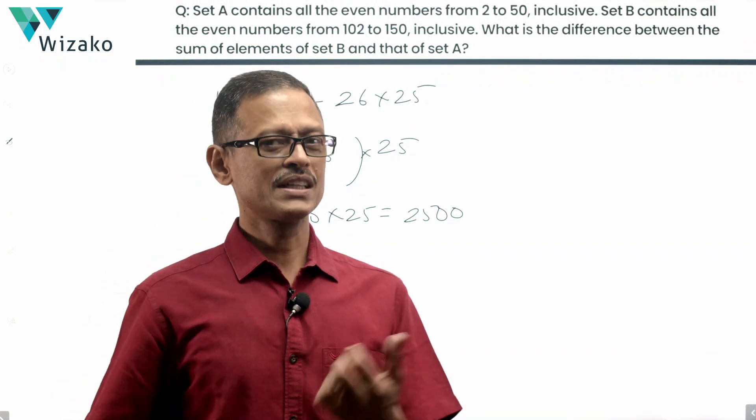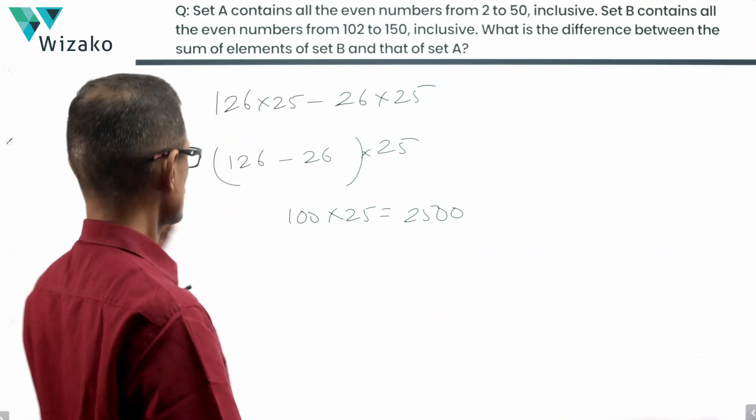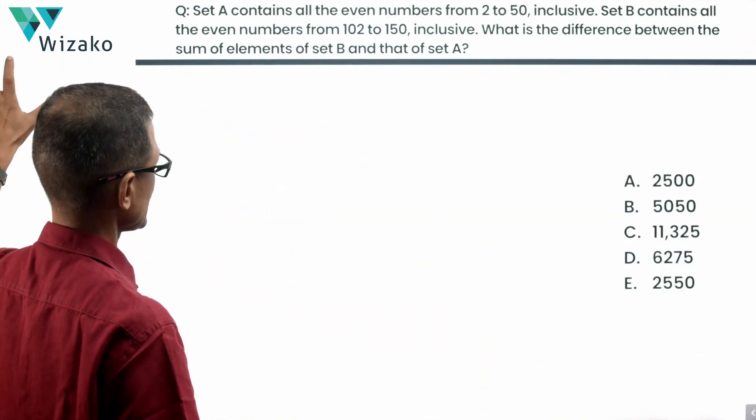Second method, a little more cumbersome than the first one. Answer is 2500. Choice A is the correct answer to the question.